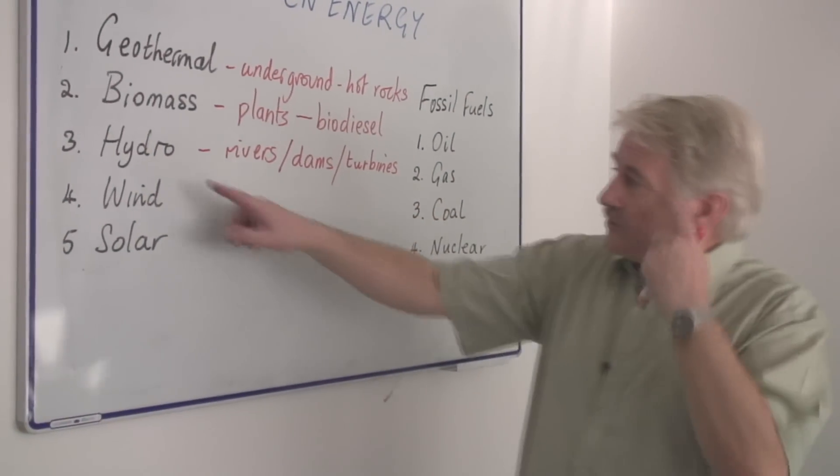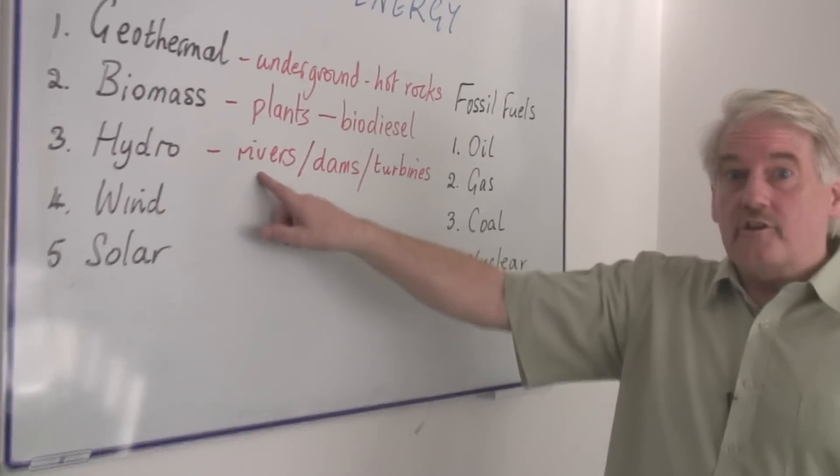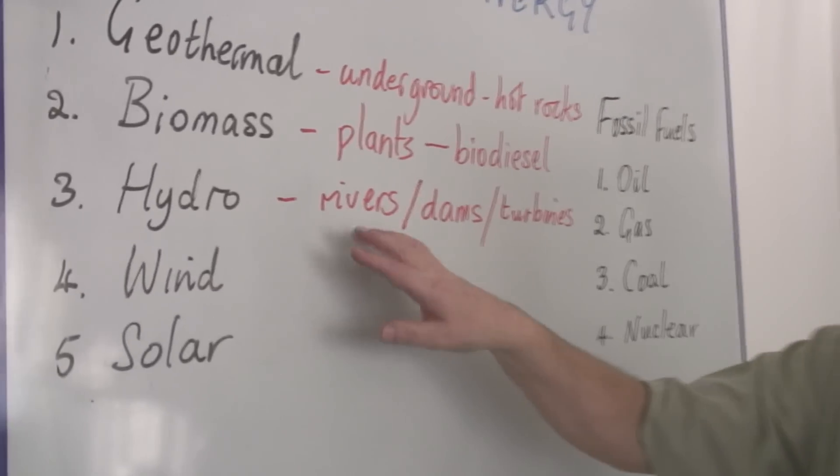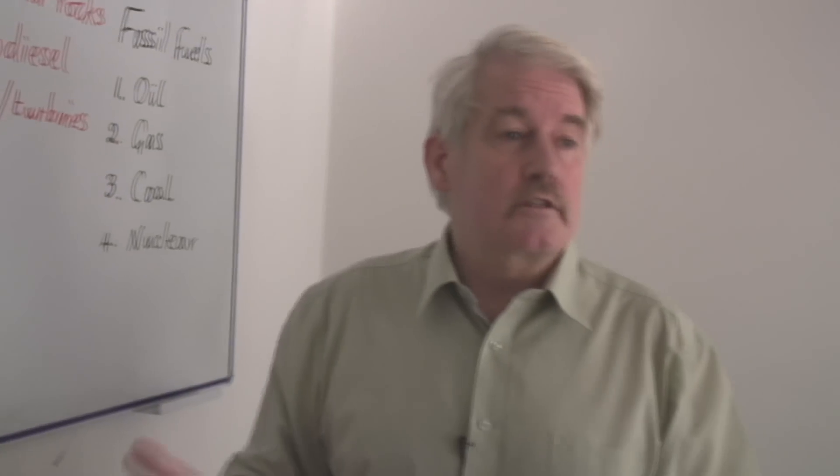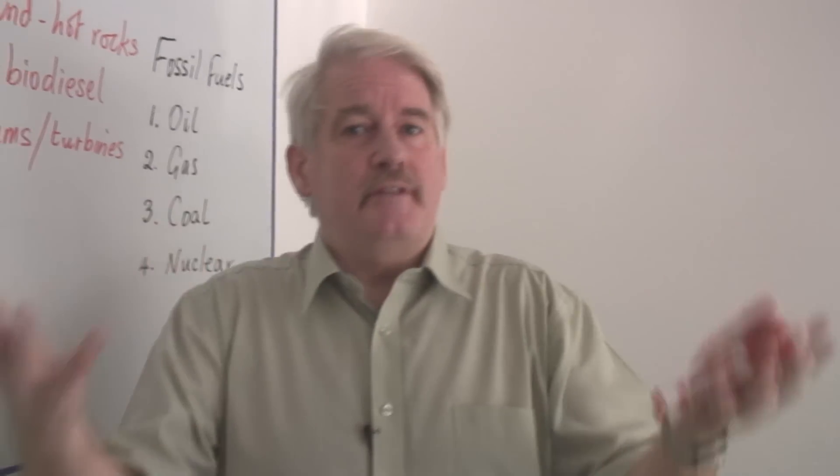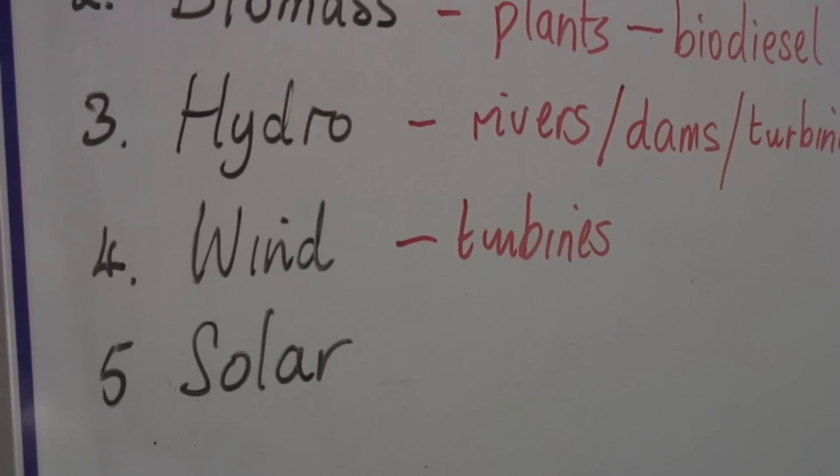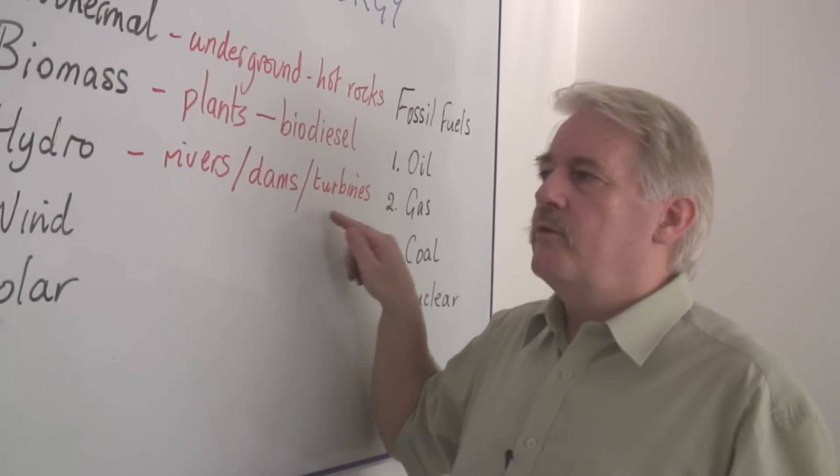Hydro energy is energy actually also from the sun, because rivers are created by the sun. The water evaporates due to the sun's energy, then precipitates as rain and falls into the rivers. We build dams, put in turbines, and we end up with electric power.